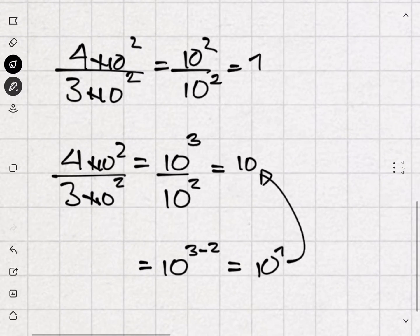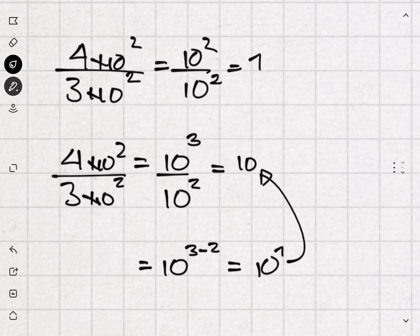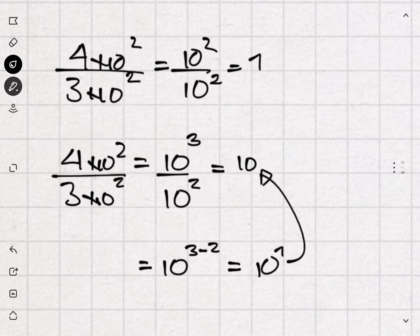Now let's do an example problem. Let's say we want to know how many times greater 4 times 10 to the 2 is than 3 times 10 to the 2. You'd think that in terms of orders of magnitude, that ratio is 1 — they're on the same order of magnitude. But it's not, because 4 times 10 to the 2 actually rounds to 10 to the 3. So we rewrite it as 10 to the 3 divided by 10 to the 2 — because 3 times 10 to the 2 rounds to 10 to the 2 — and that equals 10. So in terms of orders of magnitude only, 4 times 10 to the 2 is 10 times greater than 3 times 10 to the 2.